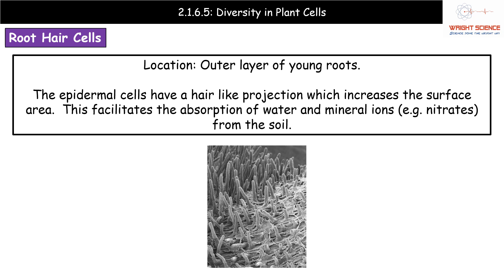The third type of specialized plant cell we need to know are root hair cells, which are found in the roots — specifically the outer layer of young roots. They are a form of epidermal cell with a little hair-like projection, and the whole idea is to increase the surface area, which means a larger area through which to absorb substances. In the case of root hair cells, those substances are water and mineral ions.